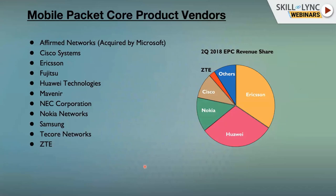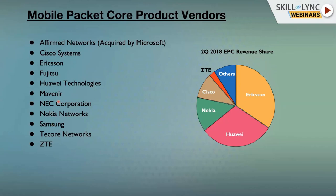In this slide we have listed all the major players who develop mobile packet core products. We have Ericsson, Huawei, Nokia, Cisco, ZTE, and a couple of other companies — we call them product vendors. There is also Mavenir Networks, which was recently acquired by Microsoft. Even Google has started to develop mobile packet core nodes. Other players include Mavenir, NEC Corporation, and Samsung. There could be many startups and small companies working to develop these packet core nodes as well.